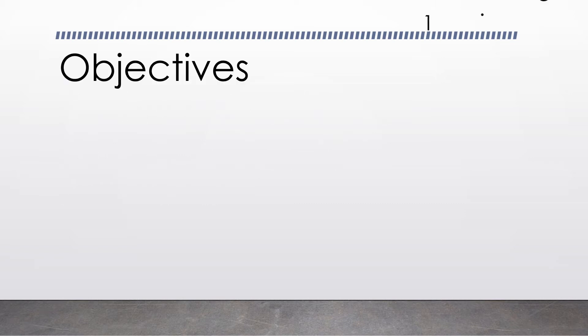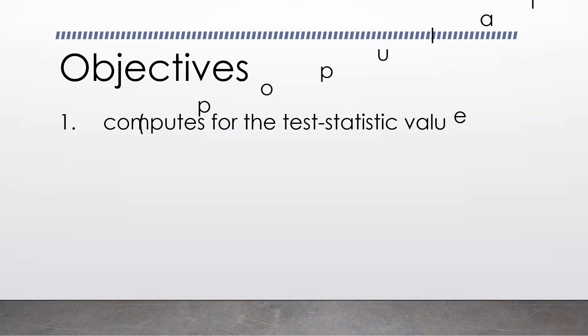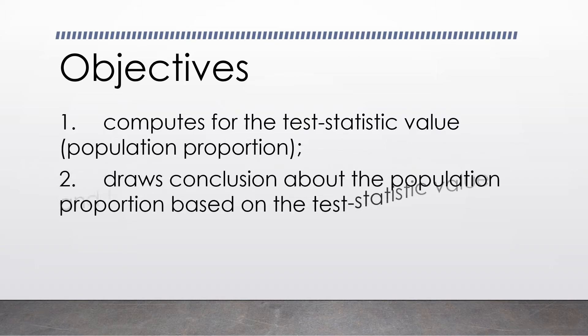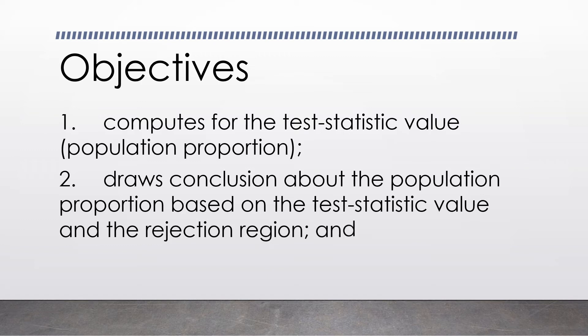Our objectives are: first, to compute for the test statistic value for the population proportion. The second is to draw a conclusion about the population proportion based on the test statistic value and rejection region.